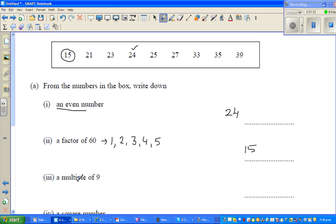A multiple of 9 - the multiples of 9 are 9, 18, 27 and so on. So here you have 27, which is a multiple of 9, so 27 is the answer there.